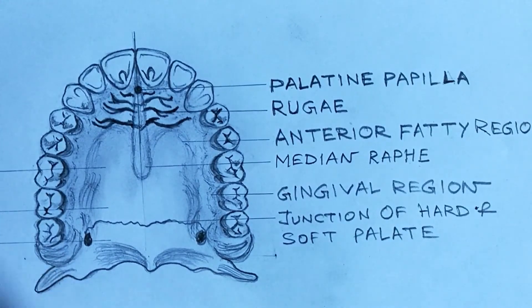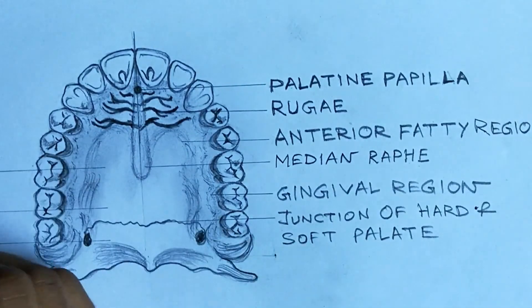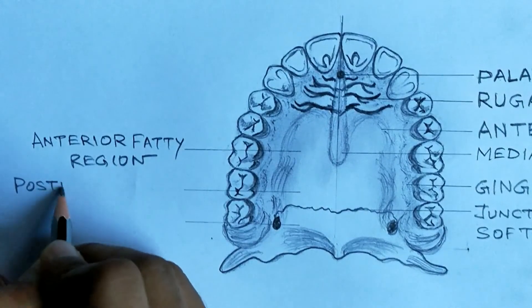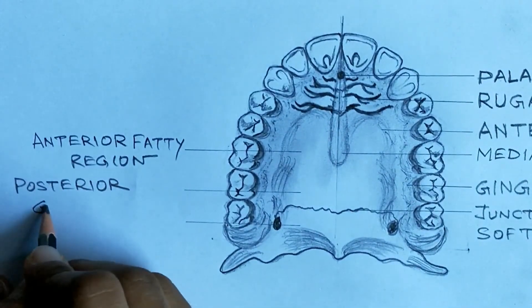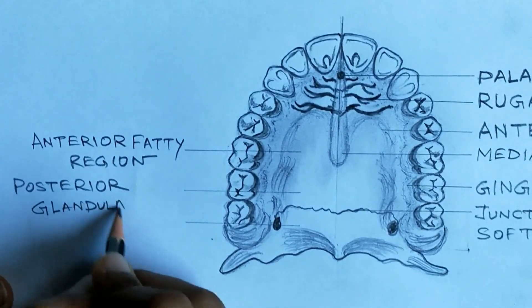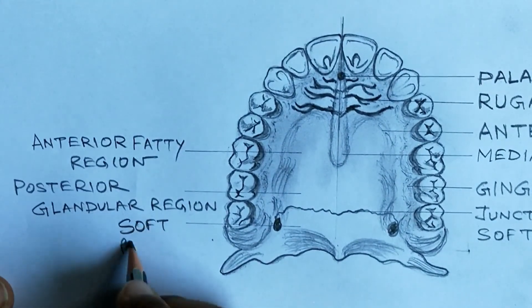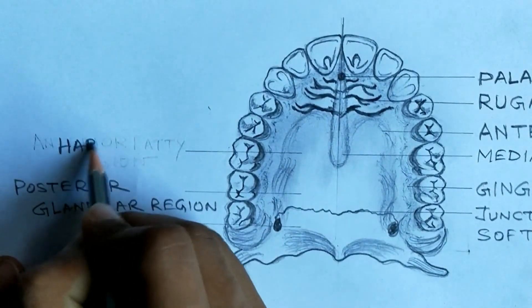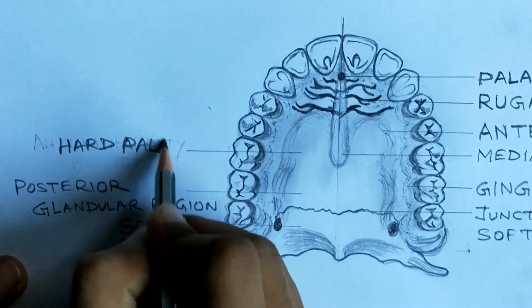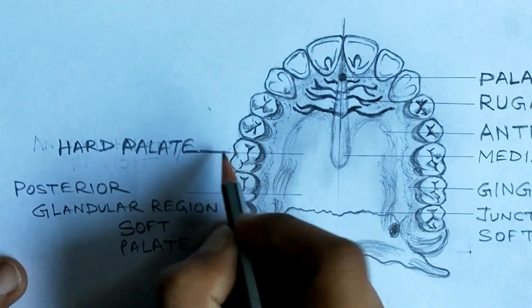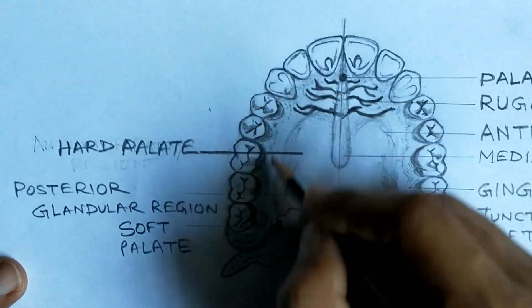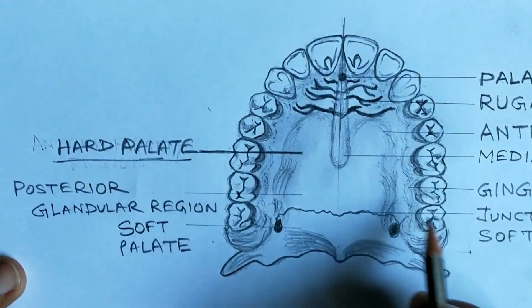The line you marked deeply, here is the junction of hard and soft palate. Posterior glandular region. You see the mark, posterior glandular region.